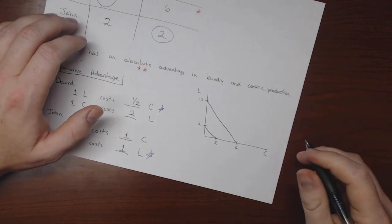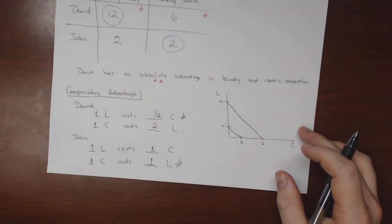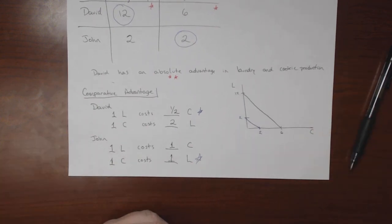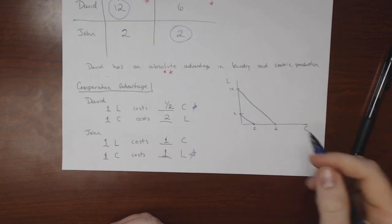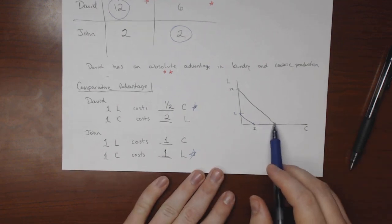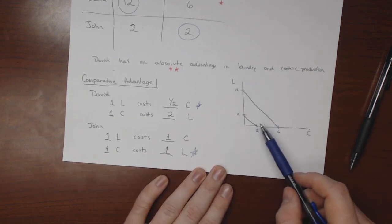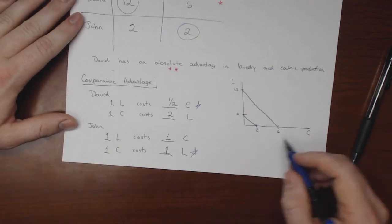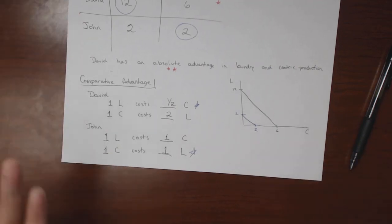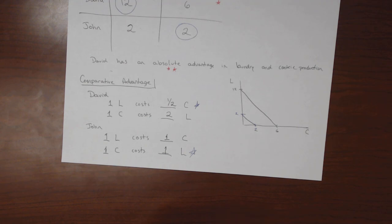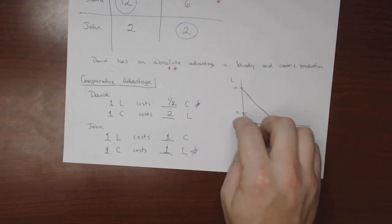So how do we figure out who should do what? We check their comparative advantages. From this we can determine each person's PPF curves. If we put laundry on one axis and cookies on the other, I have 12 and 6, and John has 2 and 2. My PPF curve is further out than his — showing I'm better at everything — but John still has the comparative advantage in baking cookies. In the next video, we'll go through determining these numbers based on the amount of labor and productivity of labor.